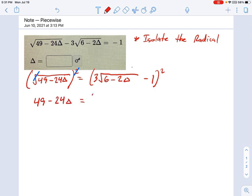The right side is more complicated because if you think about what this actually is, this is 3 times the radical 6 minus 2 delta minus 1, and it's squared. Remember that squared term? It means times itself.